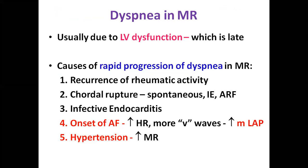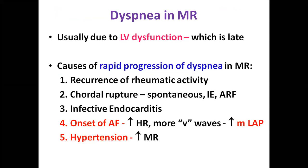Dyspnea in MR occurs late due to LV dysfunction and is slowly progressive — sometimes even with significant LV dysfunction there may be no dyspnea. Whenever there is rapid progression of dyspnea in MR, think of recurrence of rheumatic activity in children, chordal rupture causing acute severe MR — spontaneous or in infective endocarditis — or acute rheumatic fever. Another important trigger is onset of atrial fibrillation, increasing heart rate, causing more V waves and elevation of mean LA pressure. Patients with moderate MR can develop acute left ventricular failure with severe hypertension.